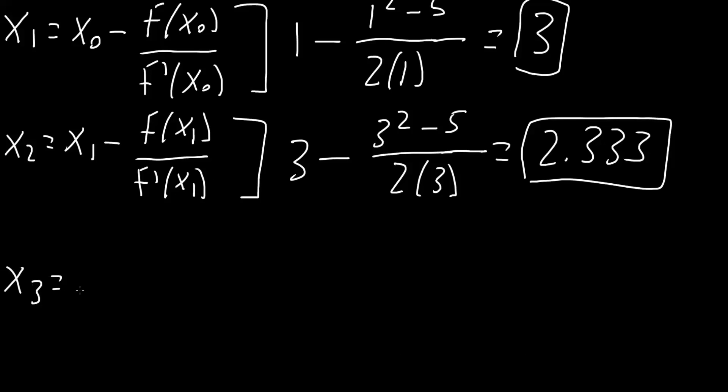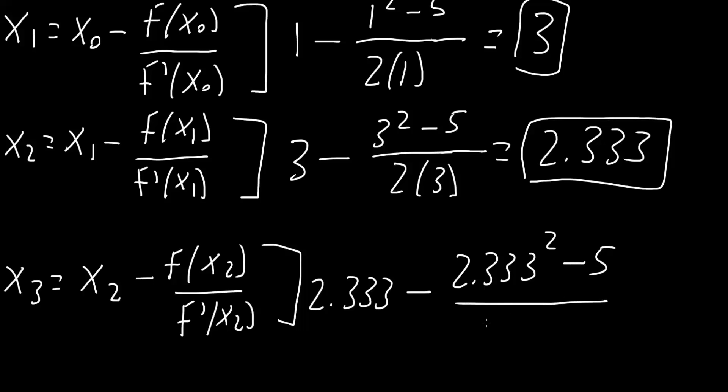So again, same idea. Now this becomes x₂ minus f parentheses x₂ divided by f prime of x₂. So we know that x₂ is this number right here. So we had 2.333 minus, we can do the same thing. So 2.333 squared minus 5 divided by the derivative. So 2 times 2.333, we would get 2.238.